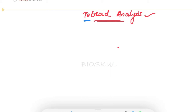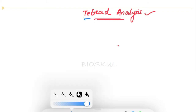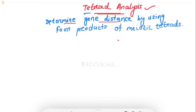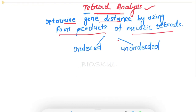Tetrad analysis is used to determine the gene distance or the linkage between the genes by using the four products of meiotic tetrads. So let me write down the definition: tetrad analysis is used to determine the gene distance by using the four products of meiotic tetrads. And tetrad analysis is of two types: one is known as ordered tetrad analysis and the other one is unordered tetrad analysis.